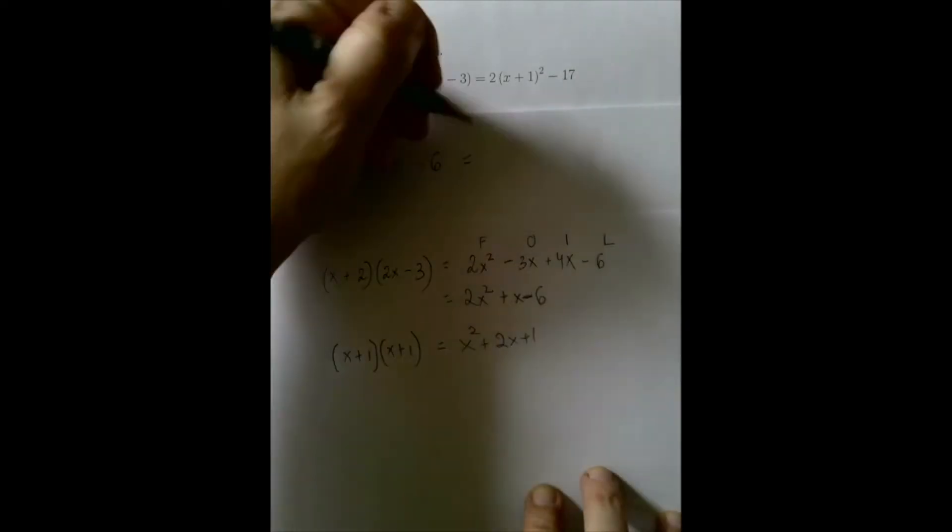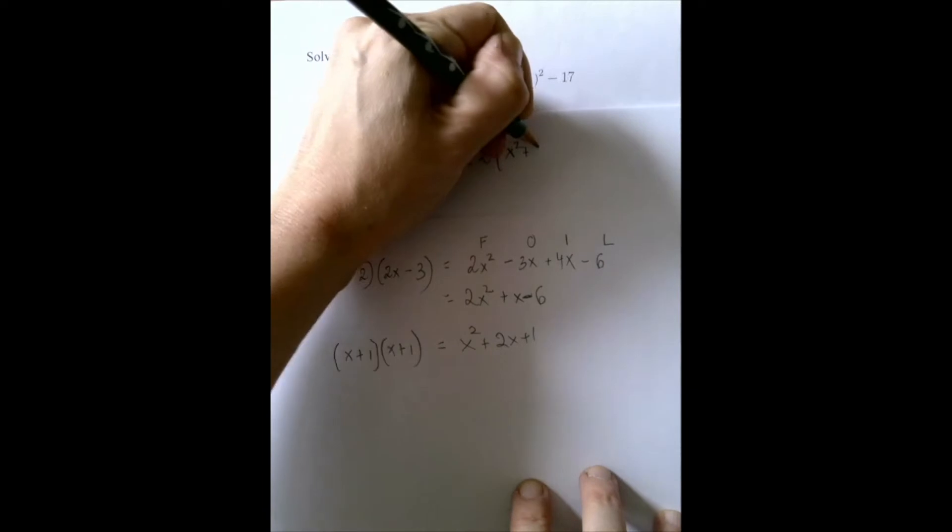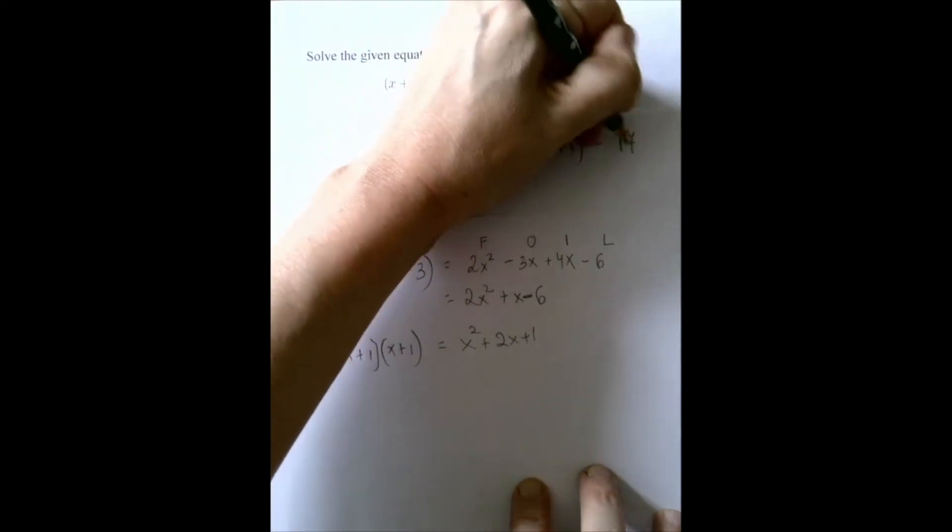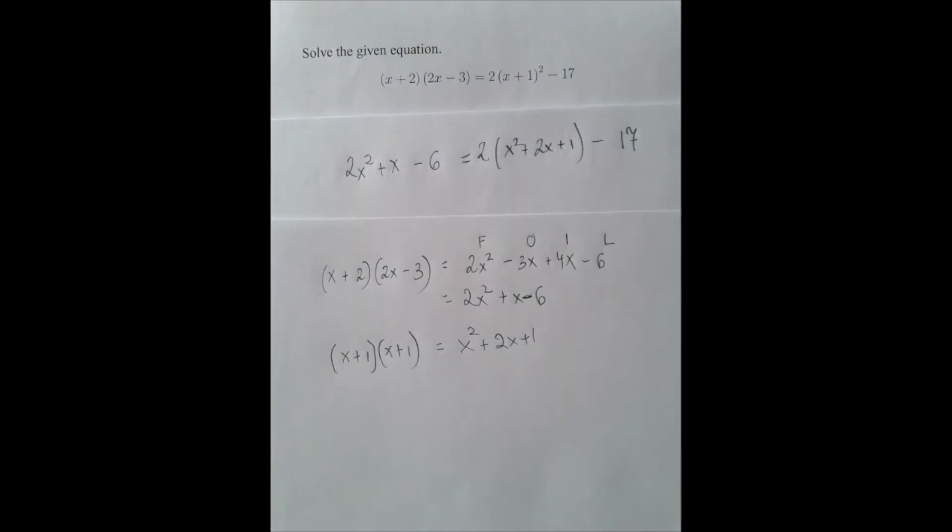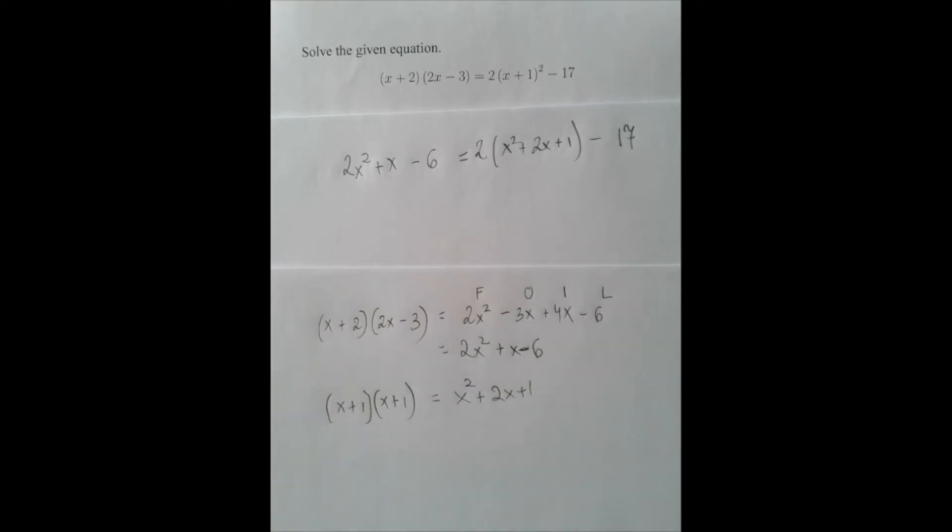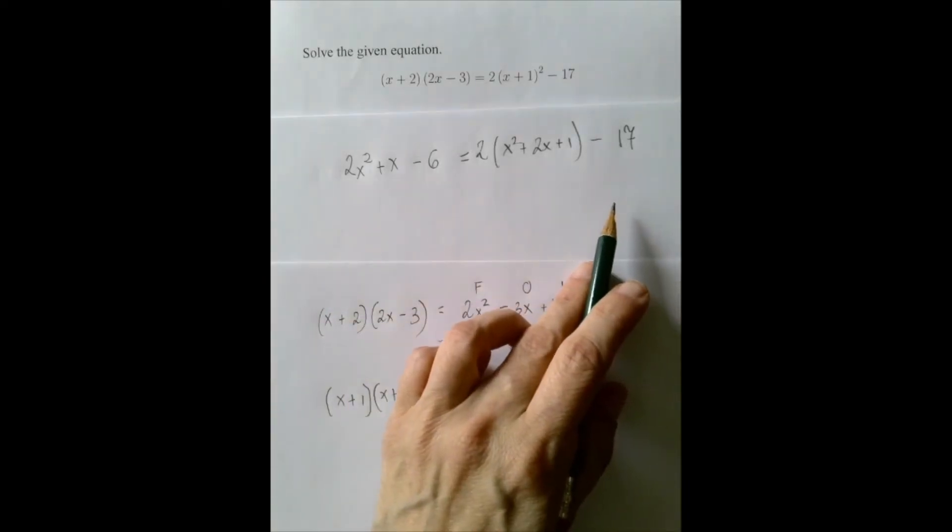And so, we have next 2 times x squared plus 2x plus 1 minus 17. My recommendation is not to clutter our computation, our main computation with this FOIL computation. Do that elsewhere in a way that you can review it in case you're looking for an error, but it shouldn't clutter the main computation. So now, this is our equation to solve.